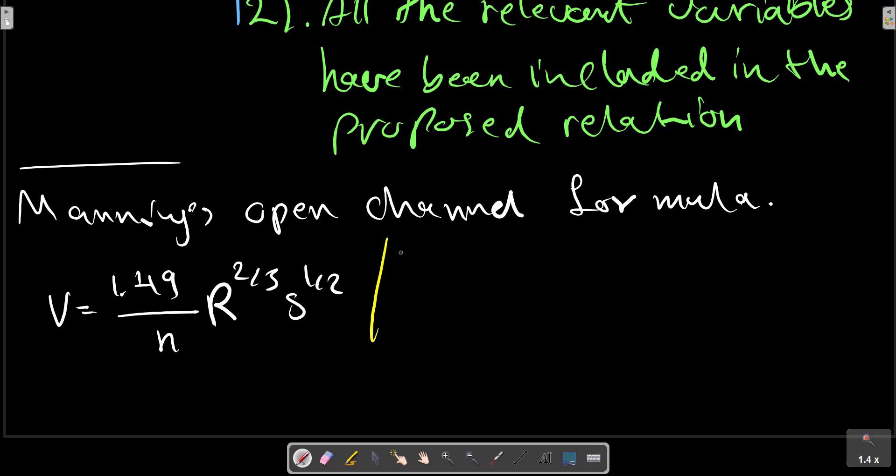This relation: V is velocity, R is hydraulic radius, N is roughness, and S is slope.